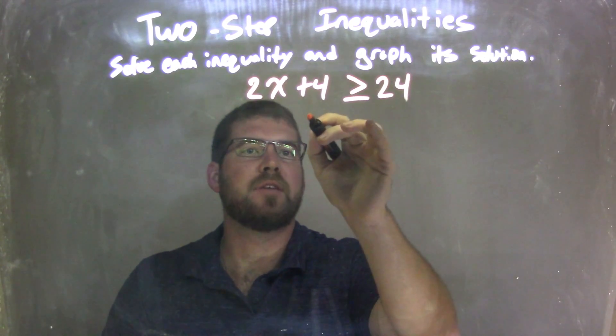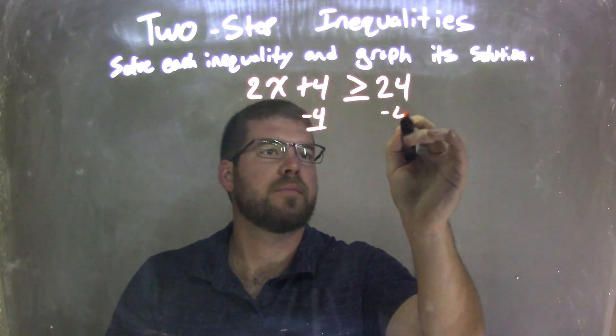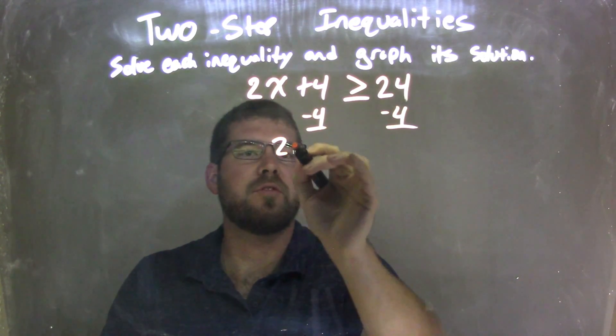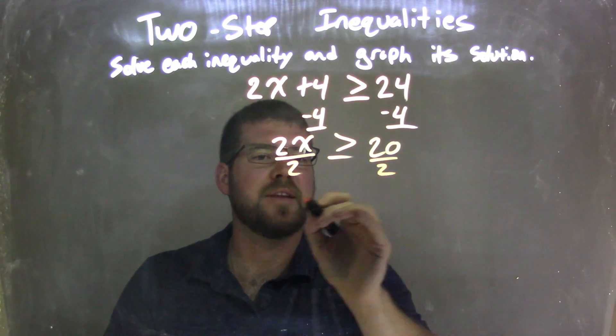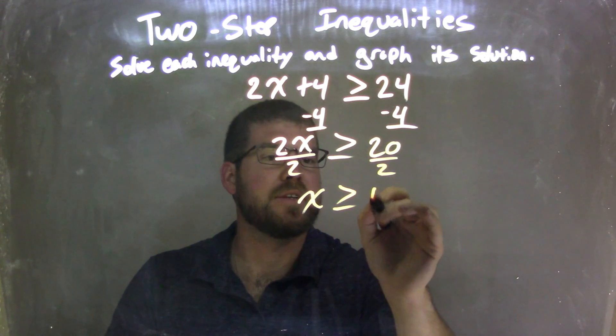Well, to solve that, I'm going to subtract 4 from both sides, leaving me with 2x is greater than or equal to 20. Then I divide by 2 on both sides, leaving me with x is greater than or equal to 10.